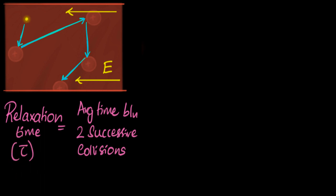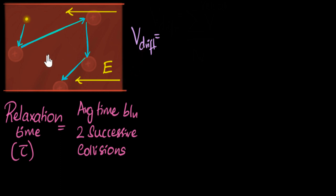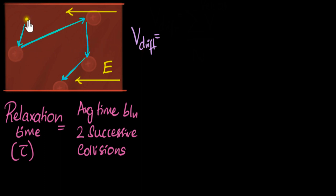With that out of the way, let's now go ahead and derive our drift velocity. The definition of drift velocity is the average velocity with which the electron is drifting forward. To be clear, we are averaging the velocity of a single electron over time — not averaging the velocities of all the electrons.